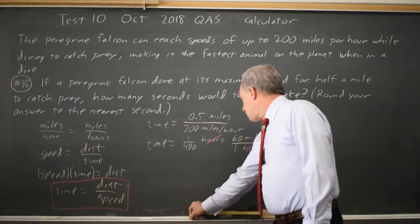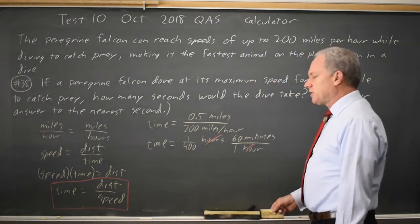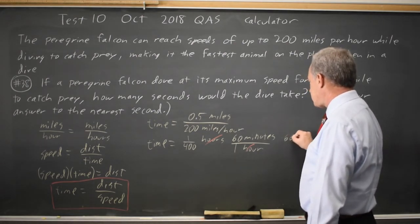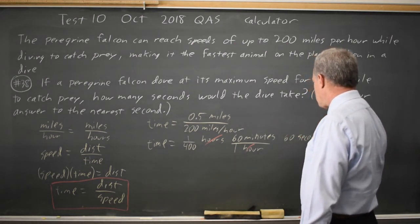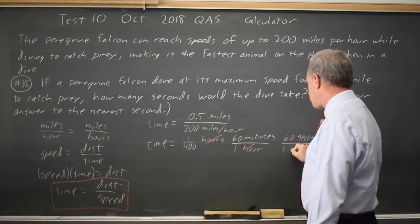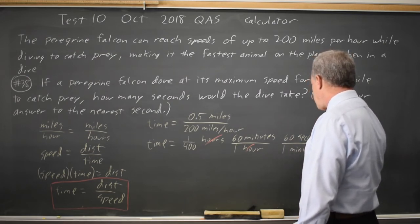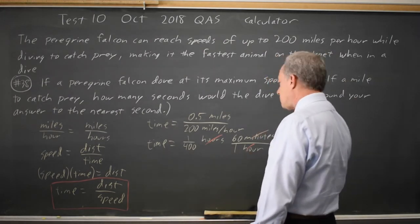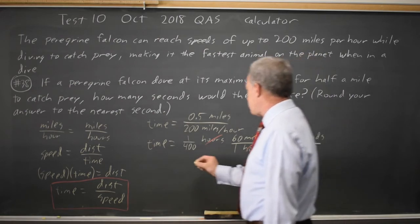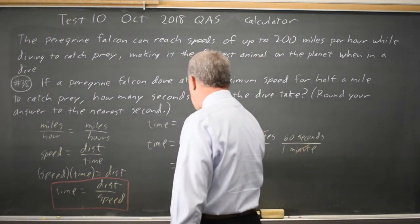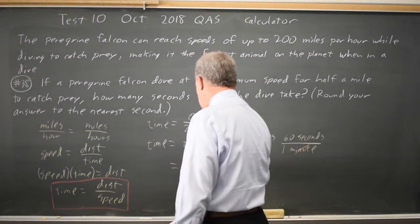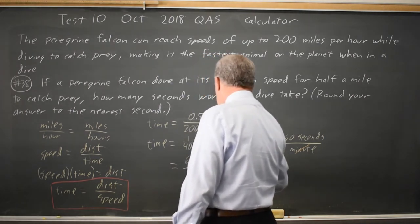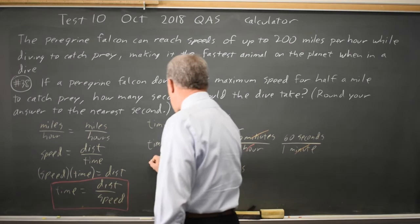And then now I have 60 over 400 minutes to convert to seconds. 60 seconds is the same as 1 minute. And again, I put the minutes in the denominator because I have minutes in the numerator. I want to cancel those. So I have 60 times 60 over 400 seconds. There's my time.